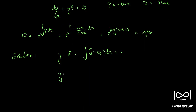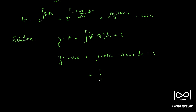So y into cos x is equal to integral of cos x into Q, which is minus 2 sin x, dx plus c. We have integral of minus 2 sin x cos x, and minus 2 sin x cos x equals minus sin 2x, plus c.